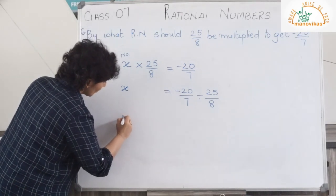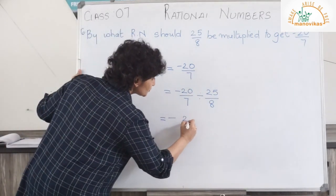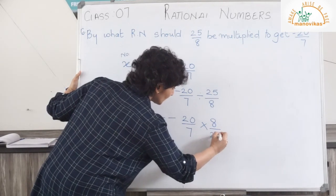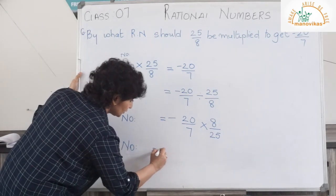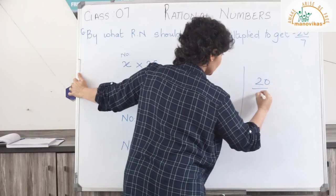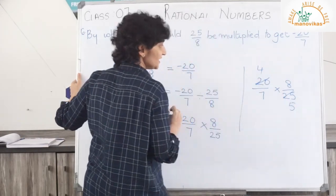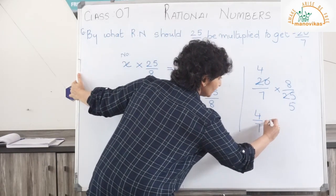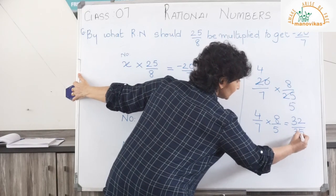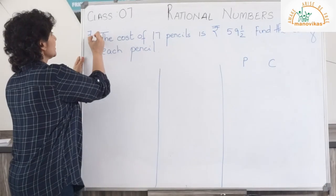The other number x equals: minus and plus gives me minus. The division becomes multiplication, so it is minus 20 upon 7 multiplied by 8 upon 25. Reducing: 5 goes into 20 four times, and 5 goes into 25 five times, leaving me with 4 eights are 32 and 7 fives are 35. So my answer is minus 32 upon 35.